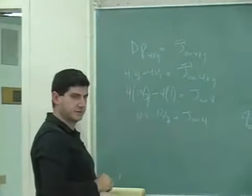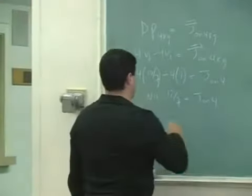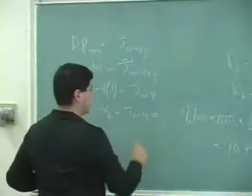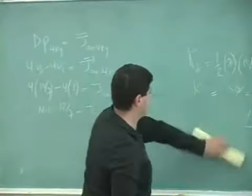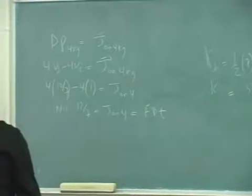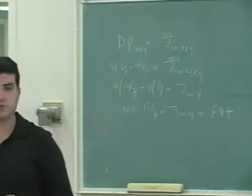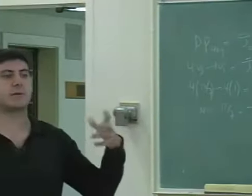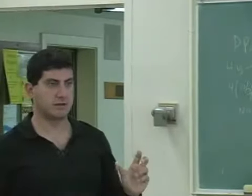All right. Now, if I want to find the force of contact, I can set the J equal to F delta T. Remember that the impulse is equal to the force of contact times the time of the contact.